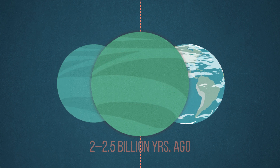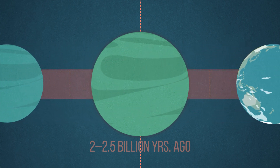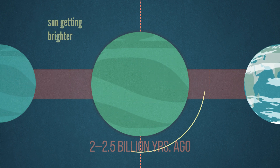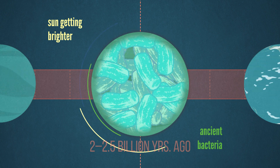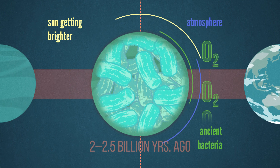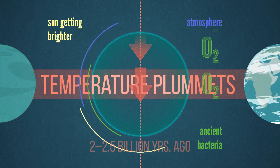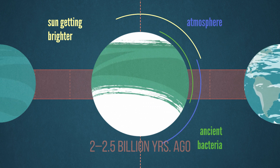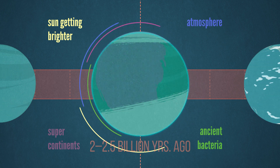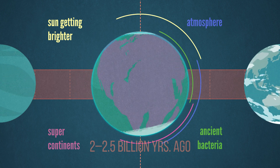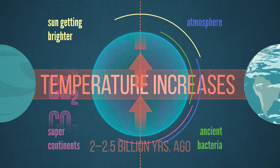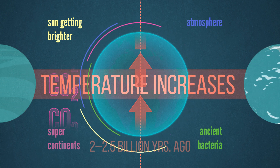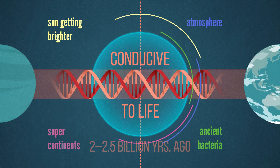Let's see how this has worked by fast-forwarding our timeline to the middle of Earth's history, around 2 to 2.5 billion years. At this point, the ocean is still green, but the Sun is getting brighter. The planet's oceans are filled with ancient bacteria. Some of these bacteria are causing an influx of oxygen into the atmosphere, triggering a chain reaction where Earth's temperature plummets, driving the planet into an ice age. Thankfully, it's during this time that continents had clumped together into large supercontinents. As the continents started spreading apart, they began releasing carbon dioxide and warming up the Earth's atmosphere, eventually bringing the planet out of the ice age and returning the temperature back to a place more conducive to life.